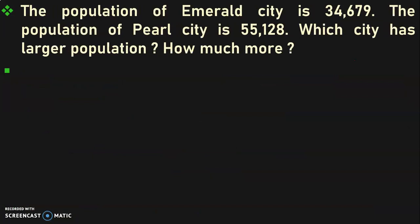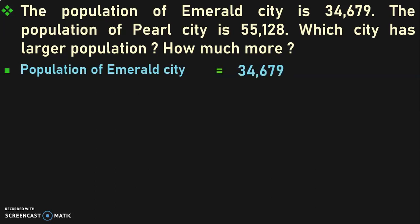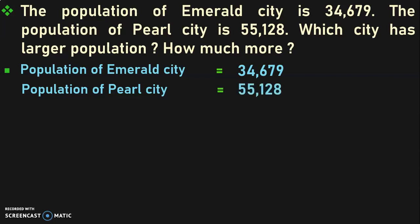Let us do the next sum. The population of Emerald City is 34,679. The population of Pearl City is 55,158. Which city has larger population and how much more? Let us write down the details. Population of Emerald City is equal to 34,679. Population of Pearl City is equal to 55,128. First, we have to find out which city has larger population, so we do a comparison of numbers.